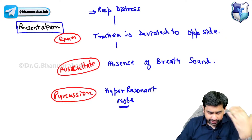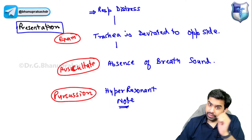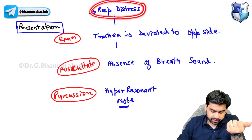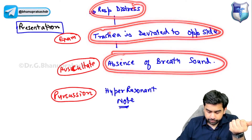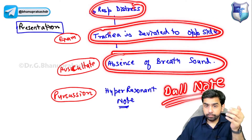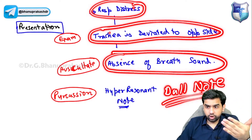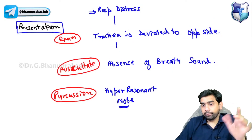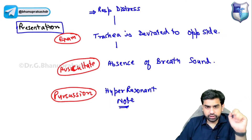How do you distinguish this from hemothorax? In hemothorax, there is respiratory distress, trachea deviated to the opposite side, and absence of breath sounds — but on percussion, you find a dull note. So if the question gives respiratory distress, trachea deviated to opposite side, absence of breath sounds, and a dull note, the diagnosis is hemothorax. In the context of trauma, this can also happen in pleural effusion, but with trauma you're dealing with hemothorax.